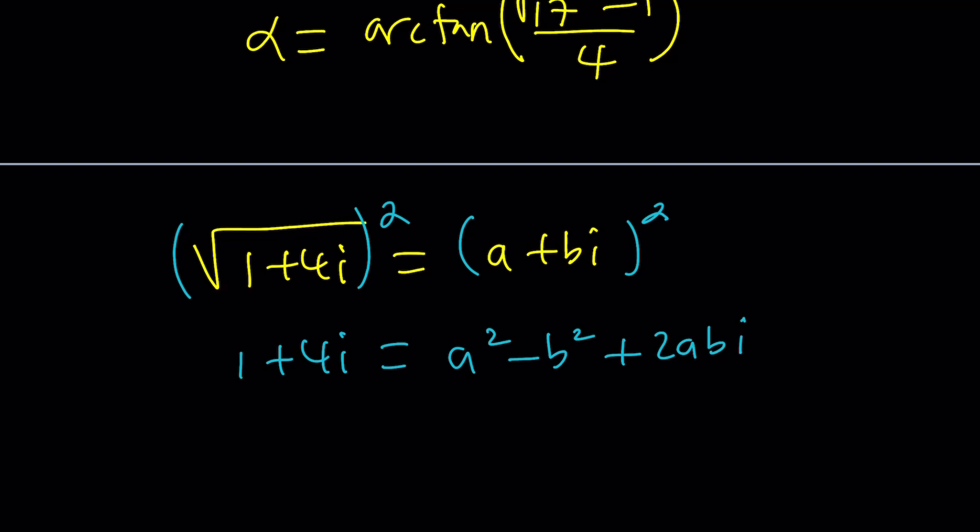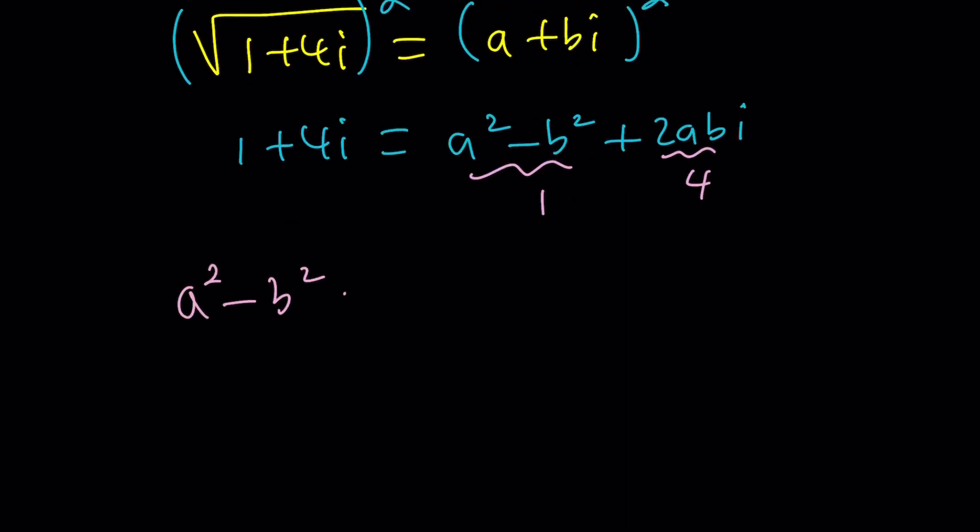When we square both sides, we're going to be getting 1 plus 4i is a squared minus b squared plus 2abi. Now the real part is going to equal 1, and this is going to equal 4, which means we have the following system. a squared minus b squared is 1, and ab is equal to 2.